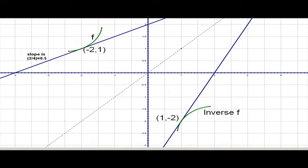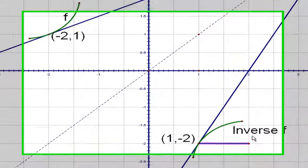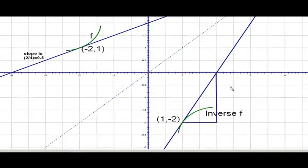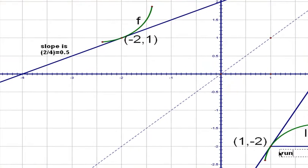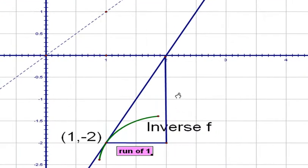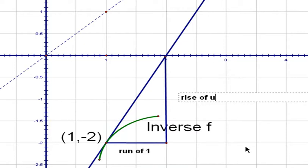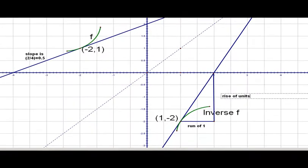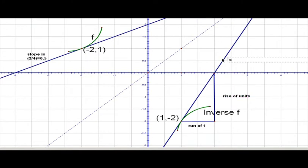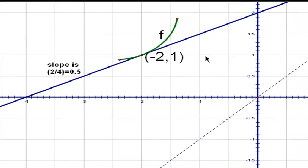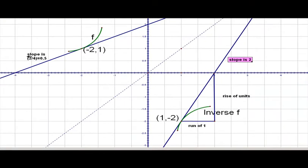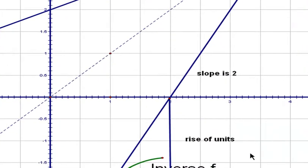And you can notice that in this case, if we make a run of 1 unit, then we get a rise of 2 units. So a run of 1 creates a rise of 2 units. The slope of this line is 2, which you can see is the reciprocal of the slope of the tangent at the corresponding point to the graph of F. This is 1 half and this is 2.